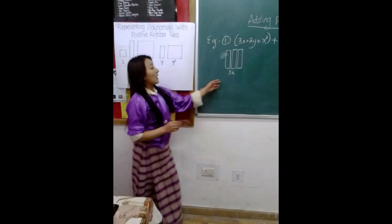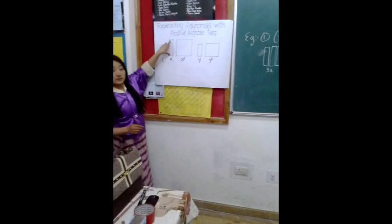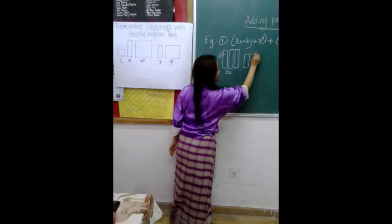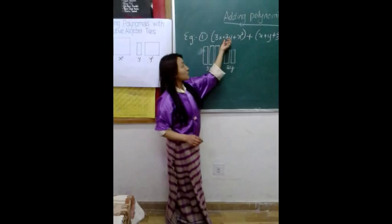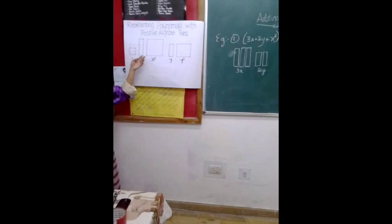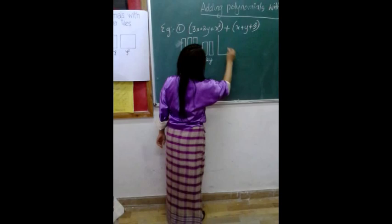Yes, ma'am. And now, two Y. The variable Y algebra tile is a little bit shorter than X. So, how many? One, two — two Y. And we will draw the tiles according to these terms. Next is X squared. X squared is a square tile that has X unit wide and X unit length. How many? Only one. So, this is one X squared.